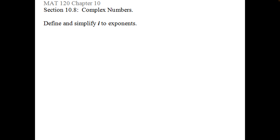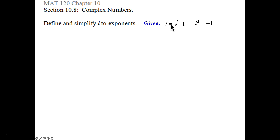Let's look at 10.8, complex numbers. In order to start complex numbers we have to first define and be able to simplify i to exponents. i is our imaginary number — we are not allowed to take the square root of negative numbers. A negative number is negative 1 times a positive value, so negative 6 is negative 1 times 6. Taking the square root of negative 1, we declare it to become i, and if I square i the square root disappears and I'm left with negative 1.